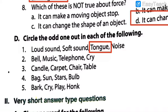Number two: bell, music, telephone, cry. The odd one is cry, because it is produced by a human being while bell, music, and telephone are all sounds of machines. Number three: candle, carpet, chair, table. Carpet, chair, and table are all non-luminous objects, whereas candle is luminous - though we have to burn it, it gives out light. So candle is the odd one.